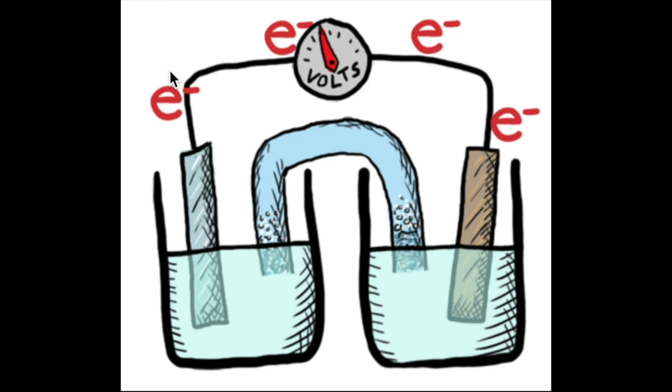Electrochemical reaction is any process either caused or accompanied by the passage of an electric current, involving in most cases the transfer of electrons between two substances: one a solid and the other a liquid.